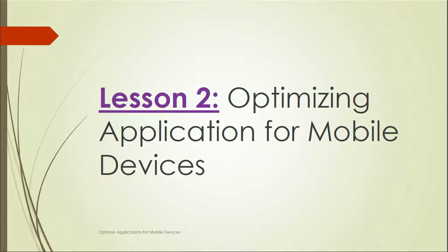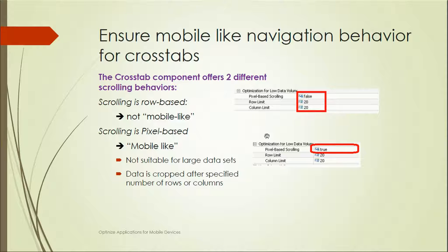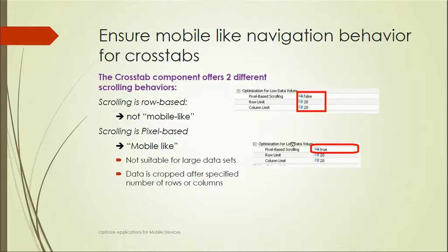Coming to the next lesson, which is about optimizing applications for mobile devices. While developing applications in Design Studio, there are navigation behavior options available. For cross-tab, there is an option for optimization for low data value. If you see pixel-based scrolling, we can specify row limit and column limit. If scrolling is row-based, it will not be a mobile-like application, but if it is pixel-based, it is mobile-like. If pixel-based scrolling is set to false, that means it is not for mobile devices.